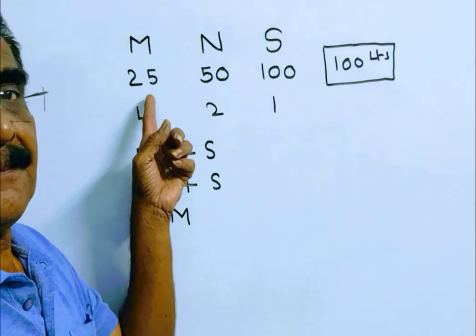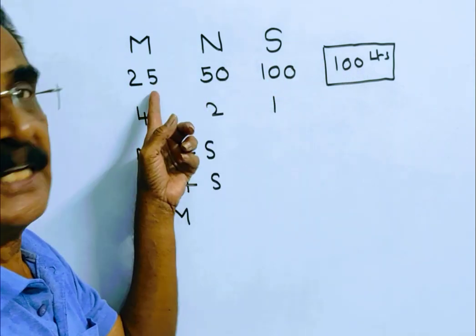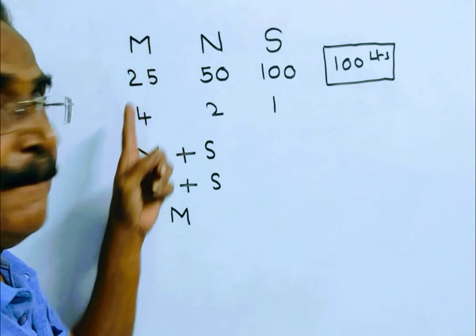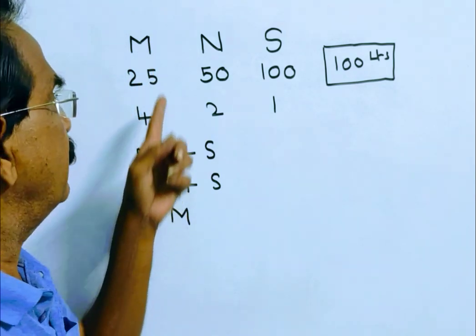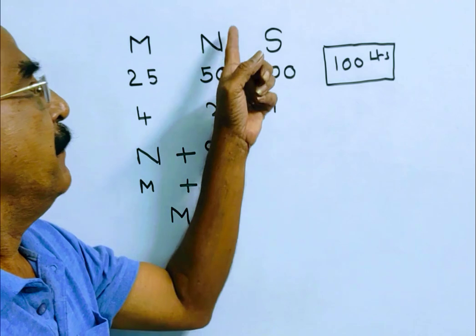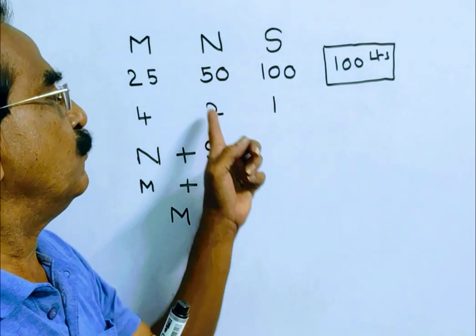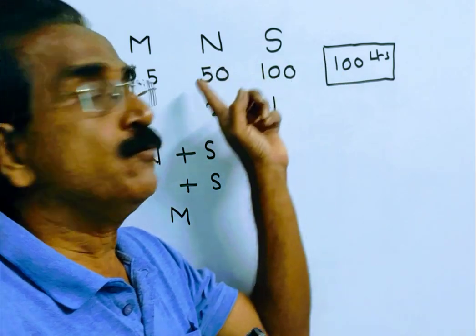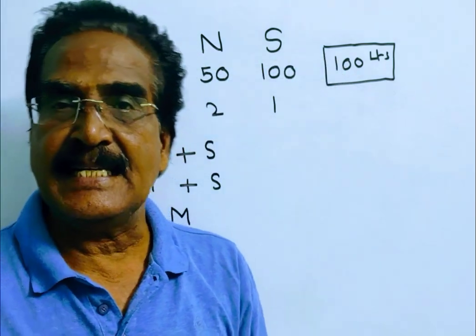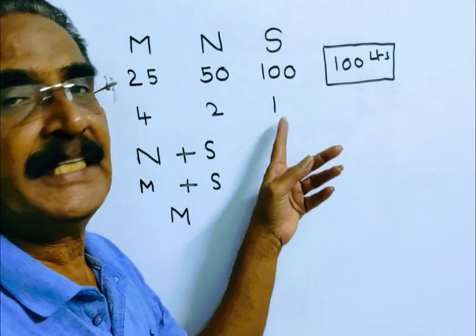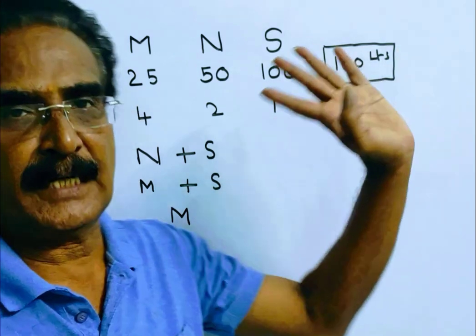Pipe M can fill the tank in 25 minutes. That means pipe M can fill 4 liters per minute. Pipe N can fill 2 liters per minute. Similarly, pipe S can fill 1 liter per minute.